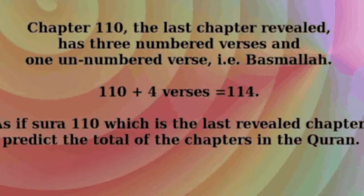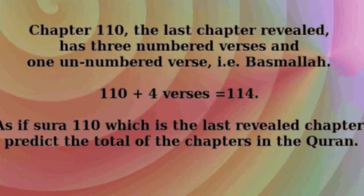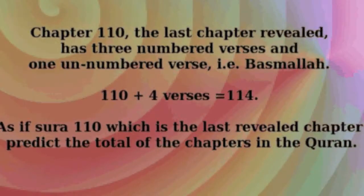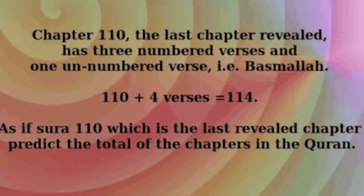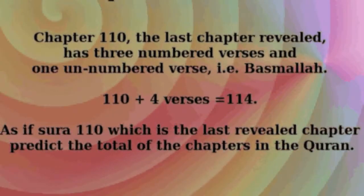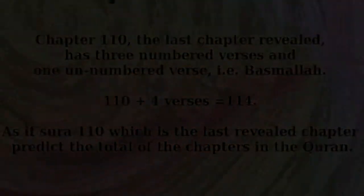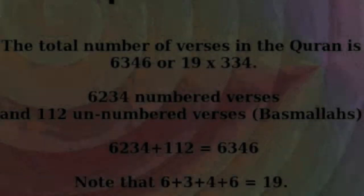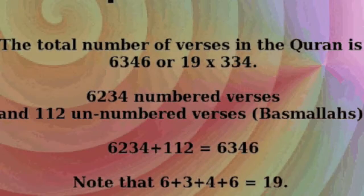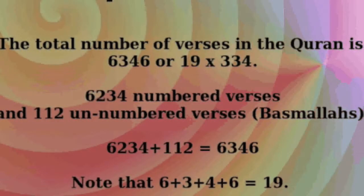The last chapter revealed is 110, it has 3 numbered verses, and 1 unnumbered verse, or 110 plus 3 plus 1 equals 114, which is the total number of chapters in the Quran, i.e. 19 times 6. It's as if the last chapter revealed predicts the total number of chapters of the Quran.